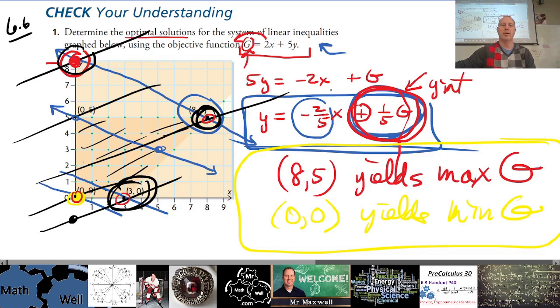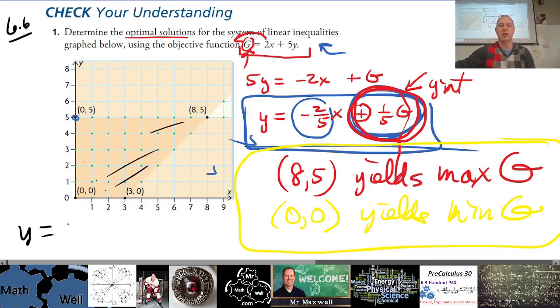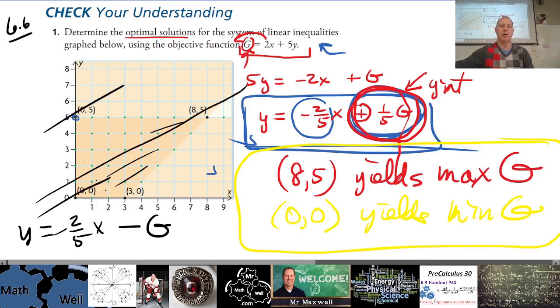And finally, the other option, what happens if G was negative? So if it was y equals, let's say, positive 2/5x and then minus G, let's say it was that one. Well then you would have to do this, you have a positive slope, and then guess what, the maximum would be the smallest intercept.